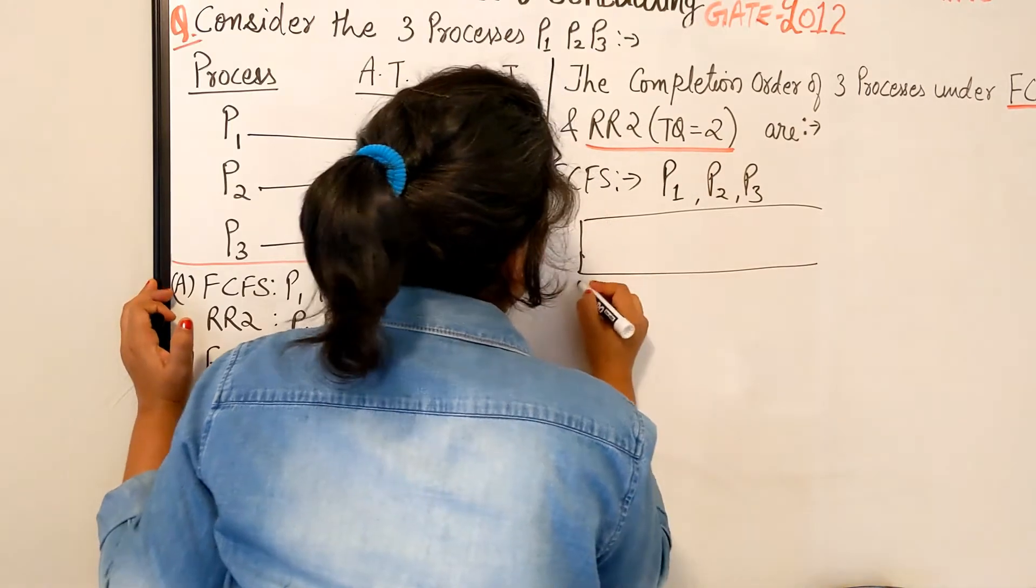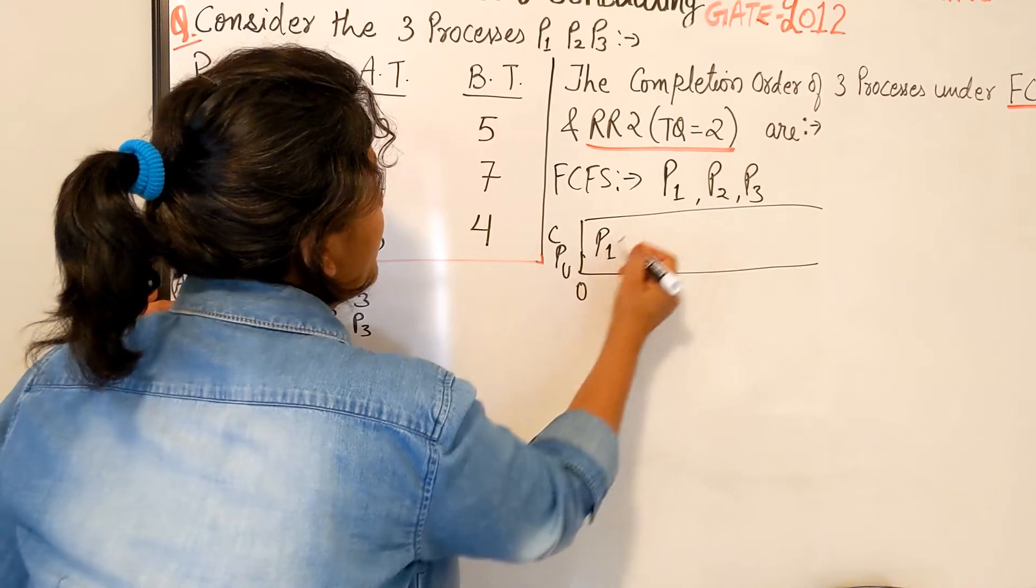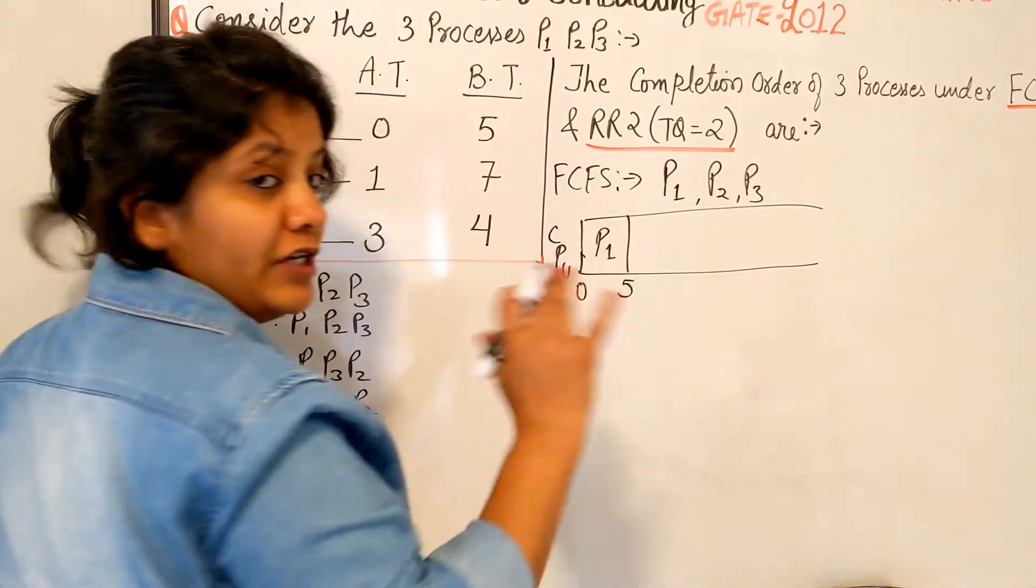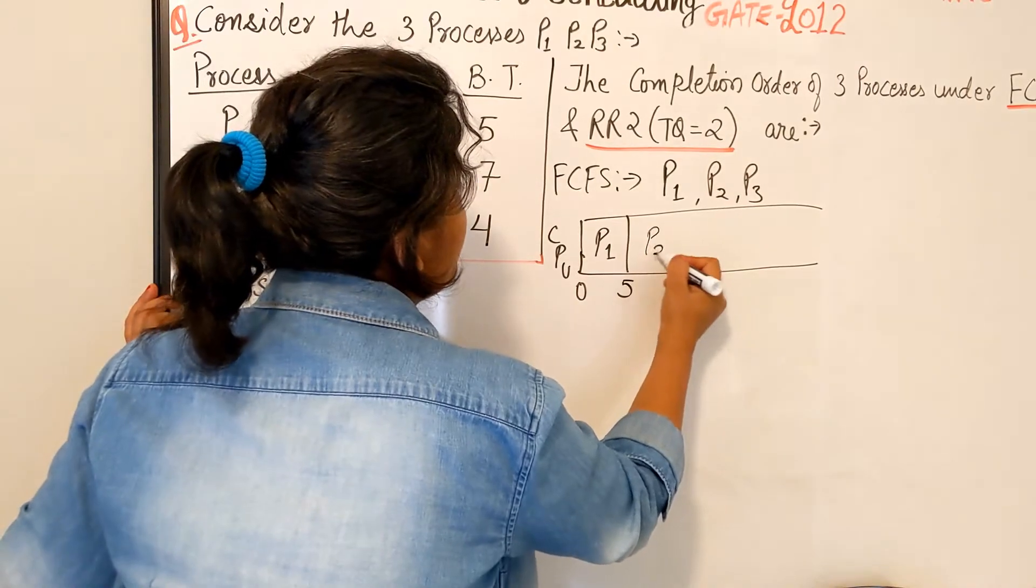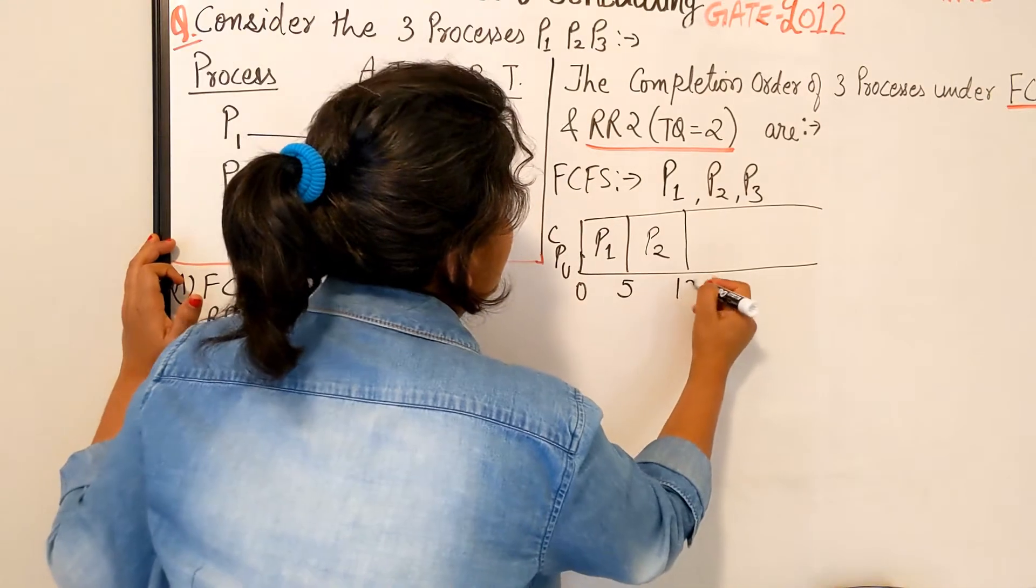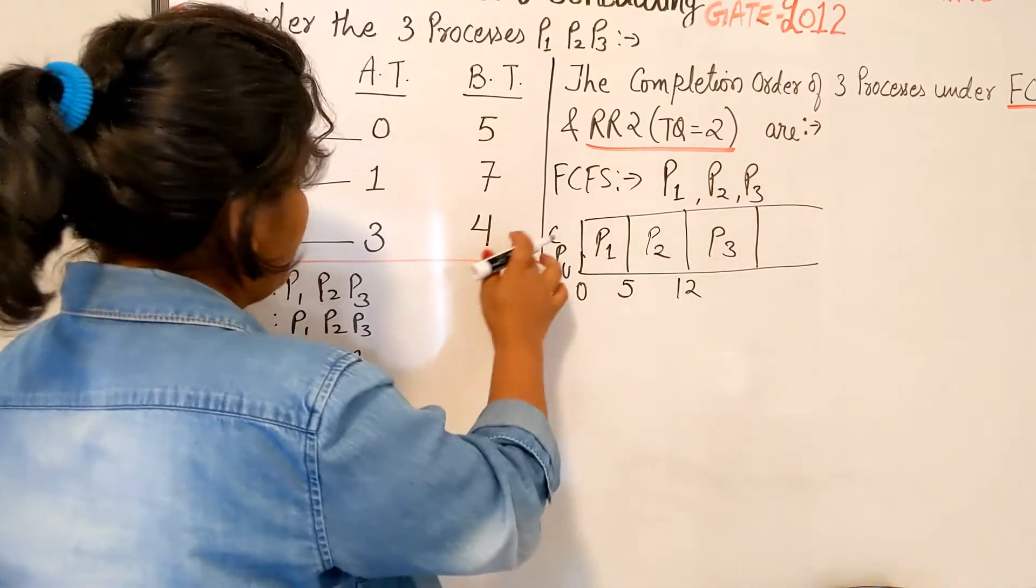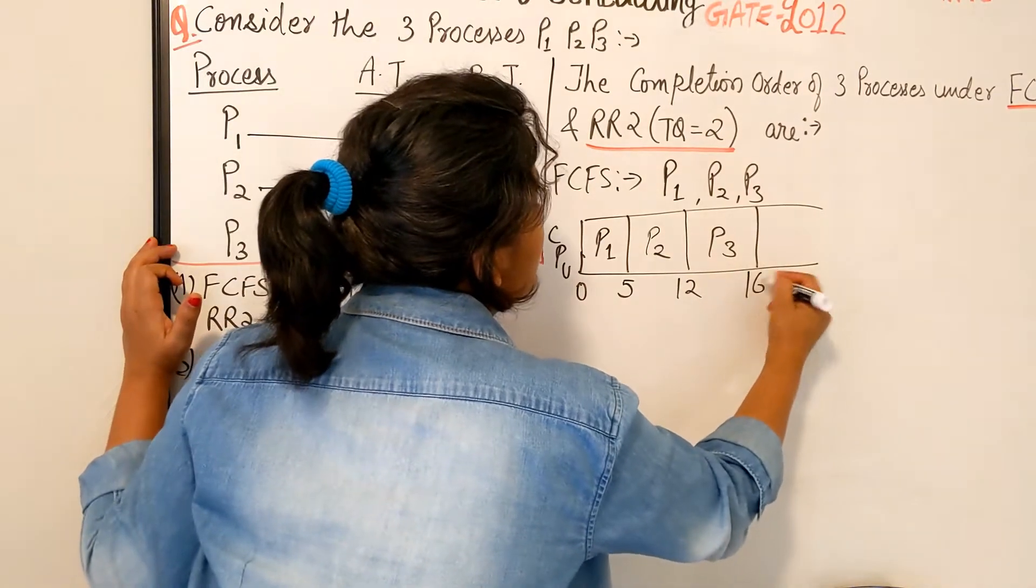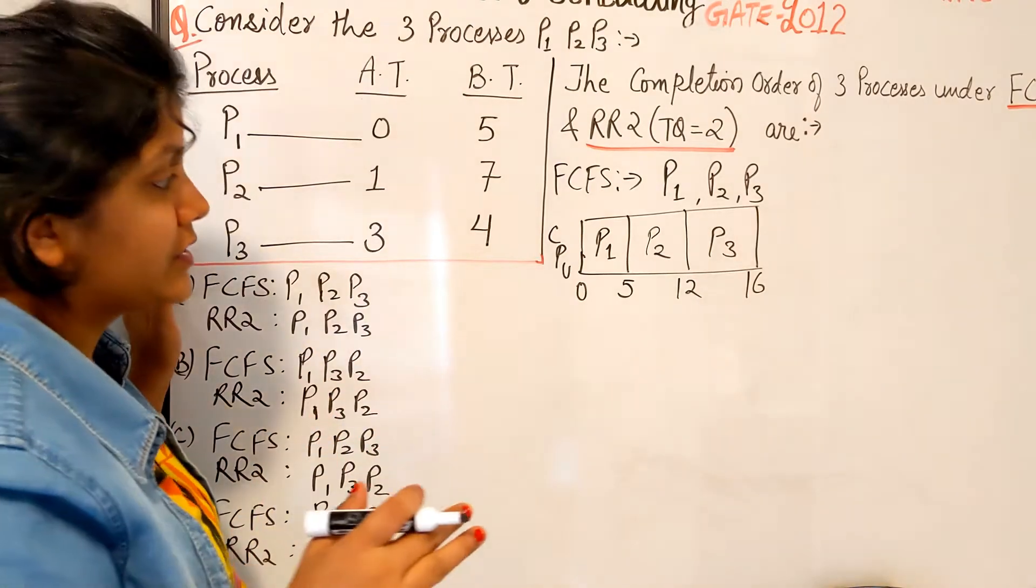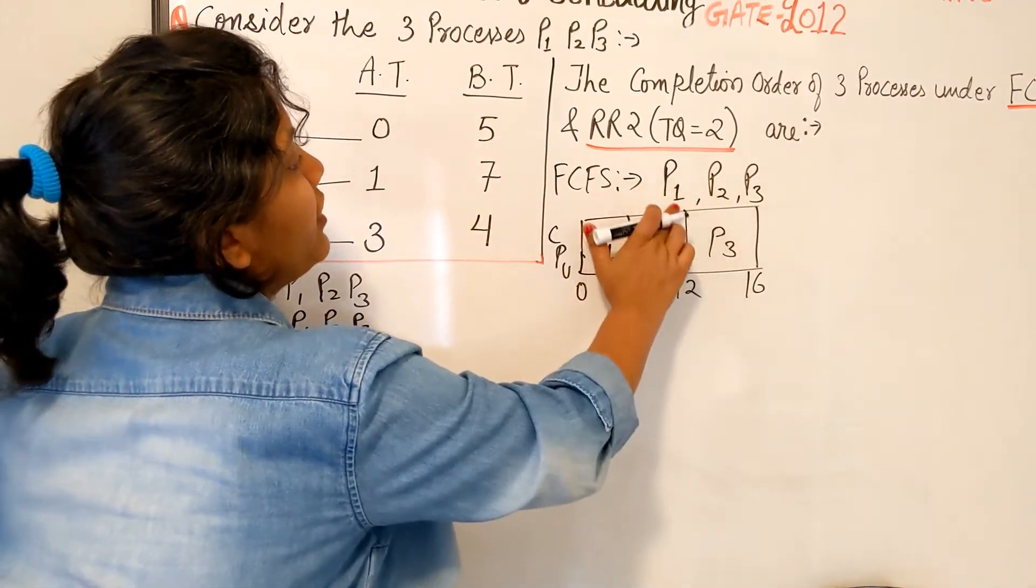If I just have to put it in the chart, here you can see at time 0 we have process P1 right for the CPU and it runs from 0 to 5 and finishes. Then comes P2 which takes 7, so 5 plus 7 is 12. And then lastly comes P3 which takes 4, so 12 plus 4 equals 16. This is the simplest Gantt chart for First Come First Serve. The order of completion is P1, P2, P3.